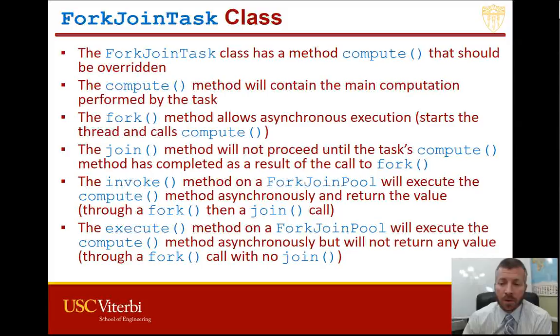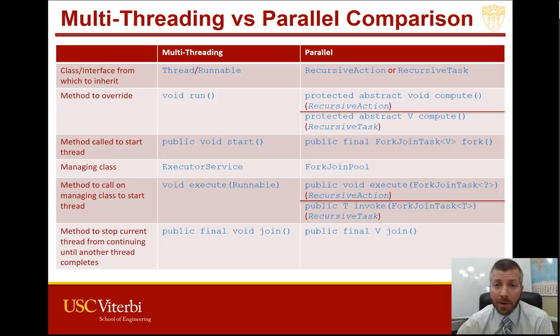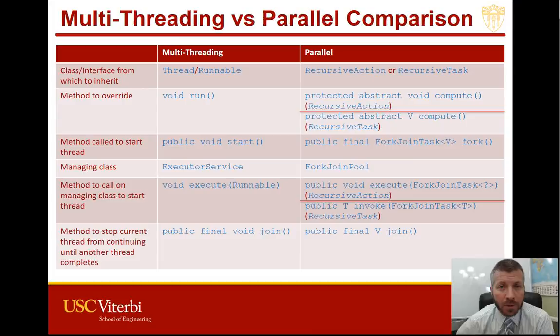A comparison table shows the multi-threading classes, interfaces, and methods mapped to their parallel counterparts. The key point is that the method to override in parallel programming is called compute. If inheriting from RecursiveAction, compute returns void. If inheriting from RecursiveTask, compute returns a generic object — you parameterize the class when instantiating it, and that type parameter is also what the compute method will return when it is forked and then joined.